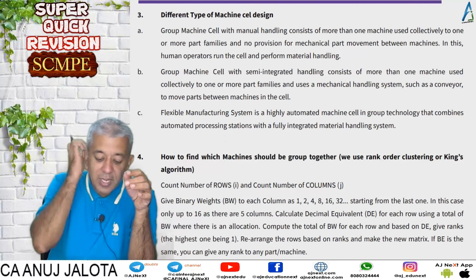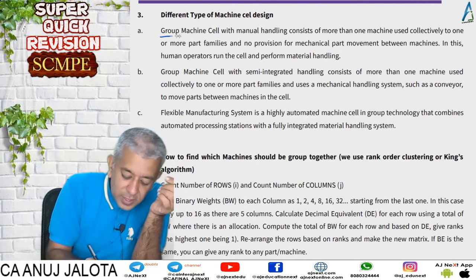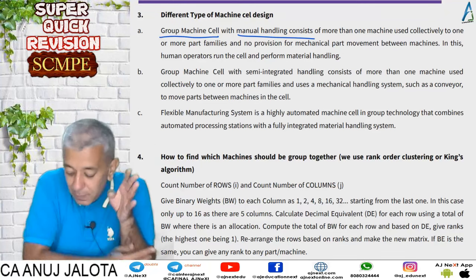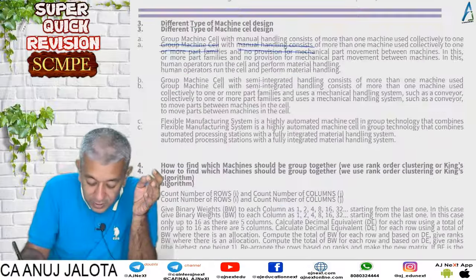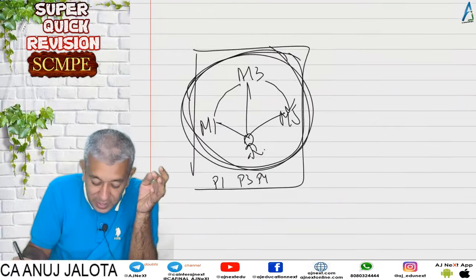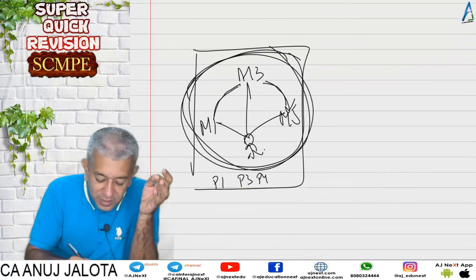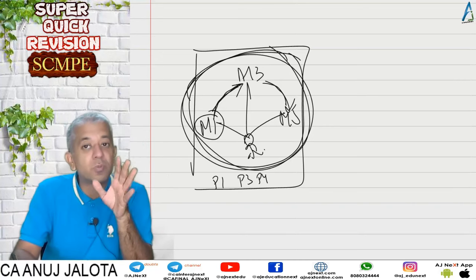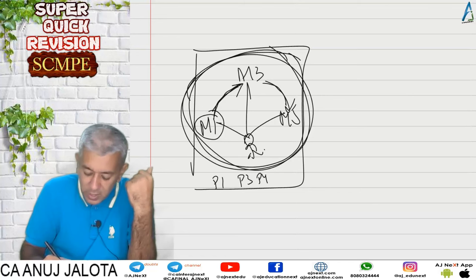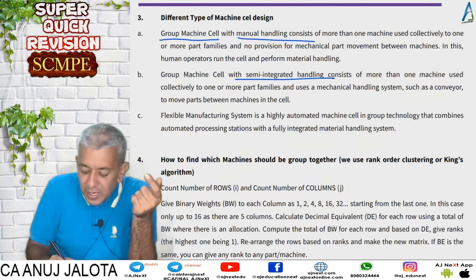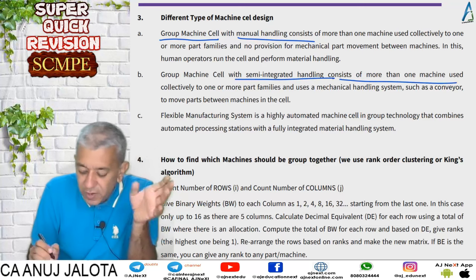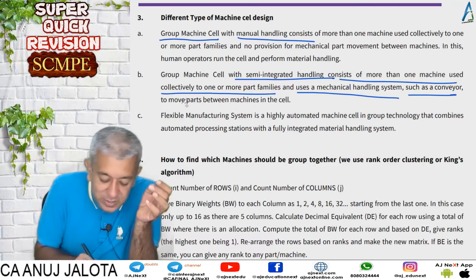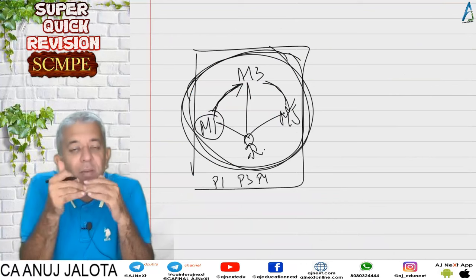There are different types of machine cell designs. The first is a group machine cell with manual handling — workers manually carry goods from one machine to another. For example, combining M1, M3, and M5: once a product is produced from M1, it is manually carried to M3. The second type is semi-integrated handling, consisting of one or more machines used collectively to produce one or more family of parts, using a mechanical handling system such as a conveyor belt to move items from one machine to another.